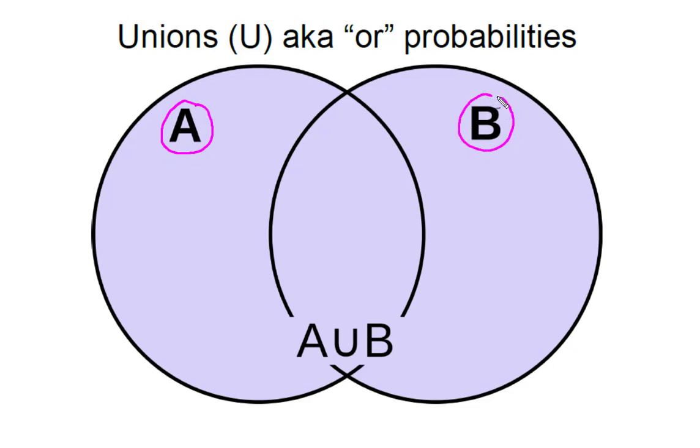So remember that as soon as you see an or probability, you see this union, you're going to run into the issue that unless they are mutually exclusive, in other words,